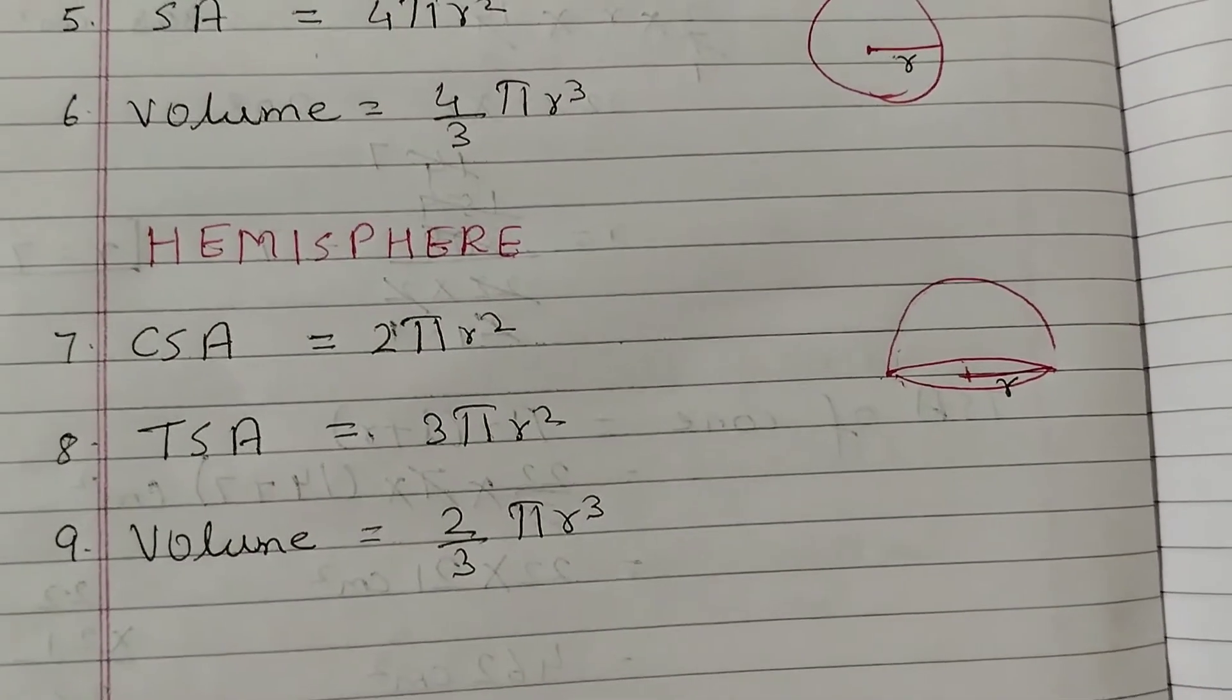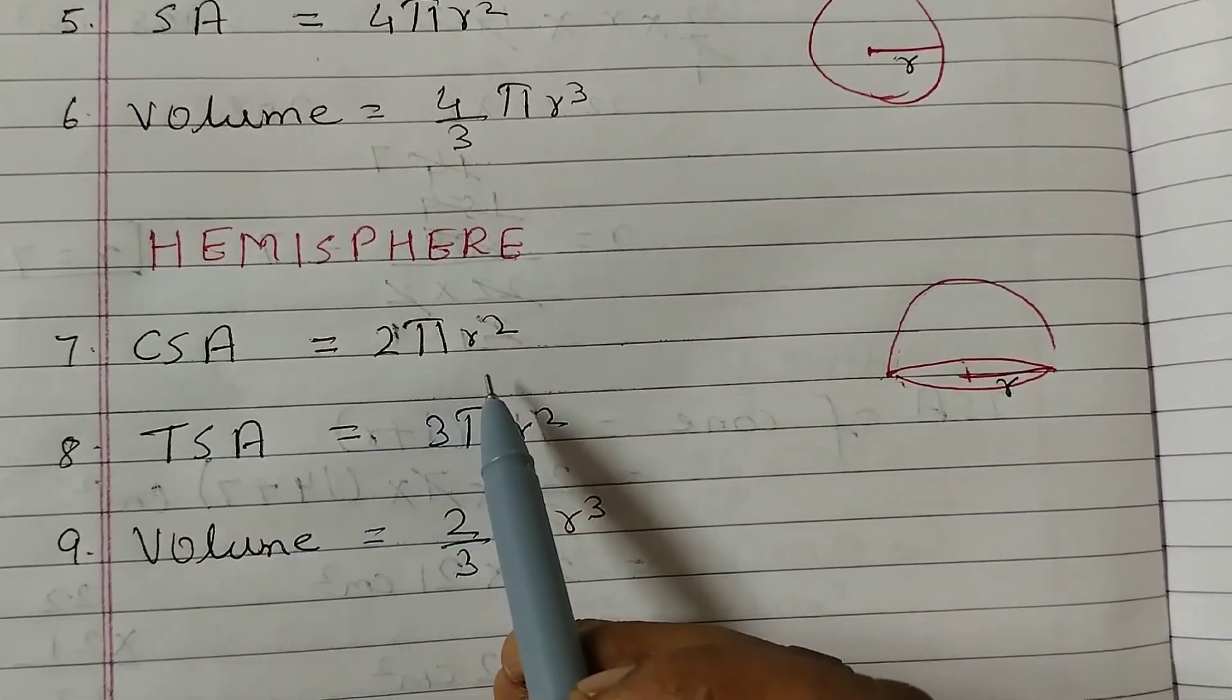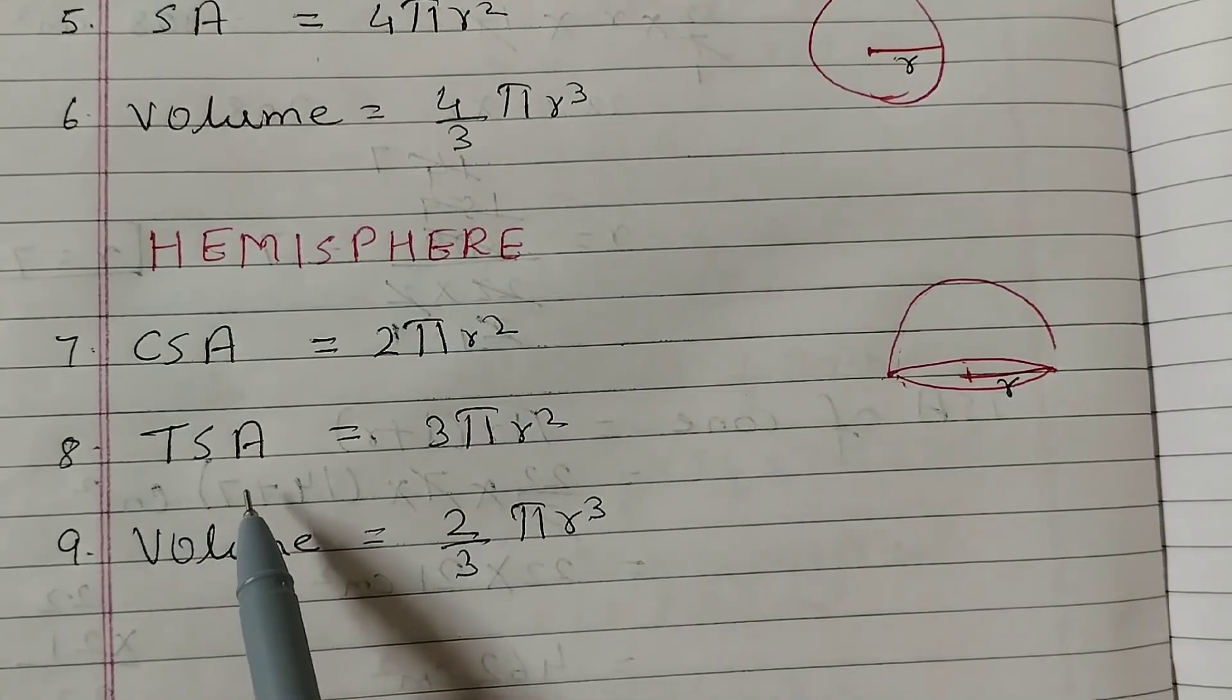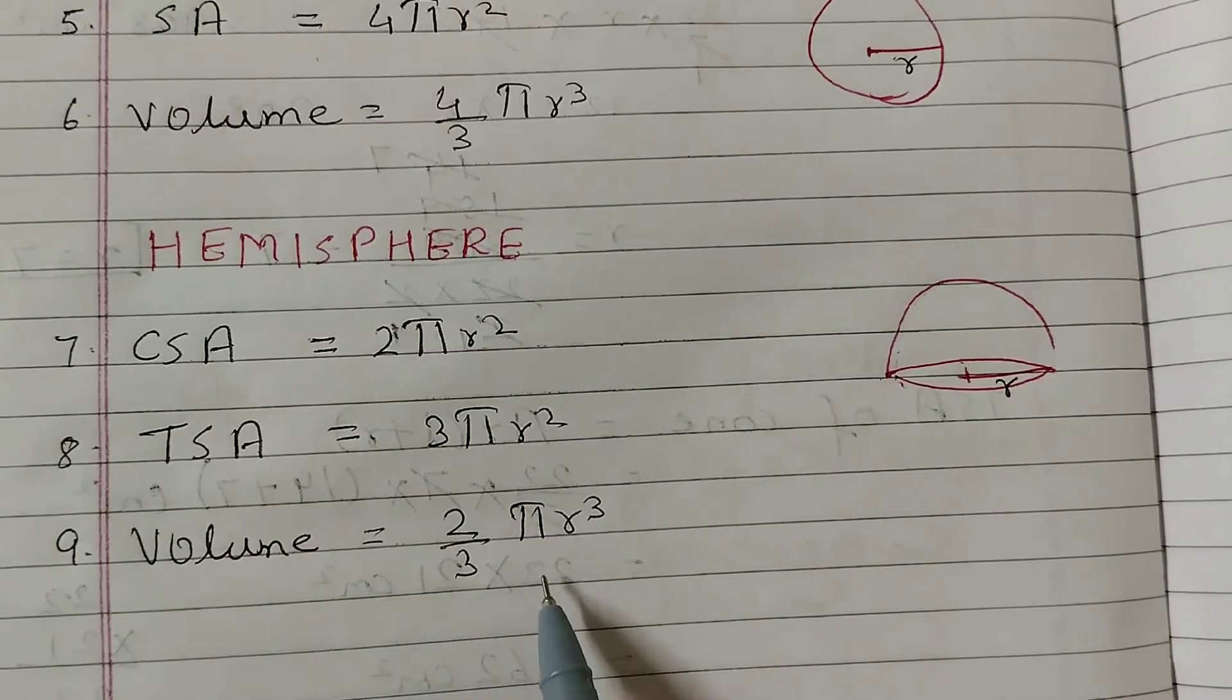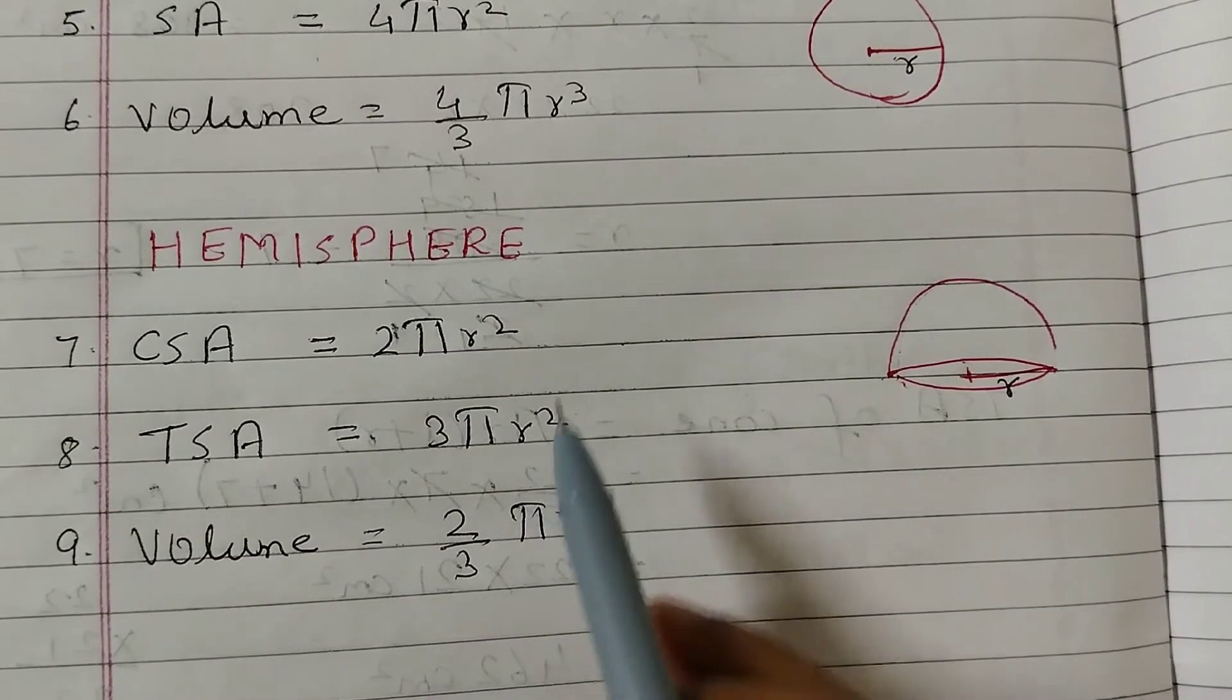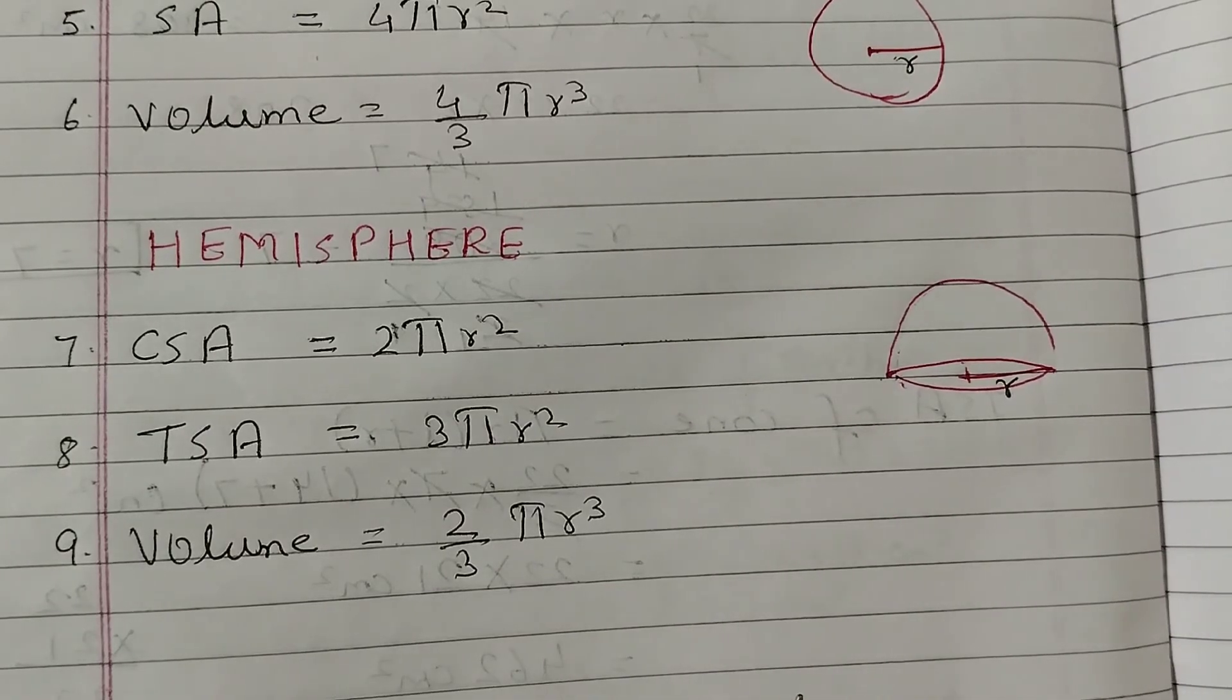For the hemisphere, that is half of the sphere, curved surface area is 2 pi R squared. Total surface area is 3 pi R squared, and the volume is 2-thirds pi R cubed. So these are the formulas that you need to know to solve the problems of surface areas and volumes.